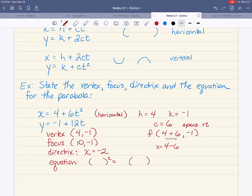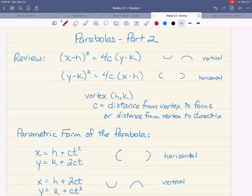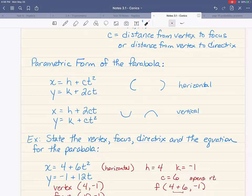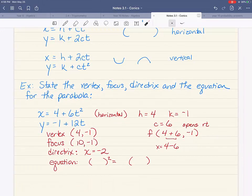All right, this one is a horizontal parabola. So I'm gonna go back up to the top of the page. I want to make sure I use the horizontal formula. Horizontal formula is the one that has y squared. So I'm going to plug in my k, my c, and my h.